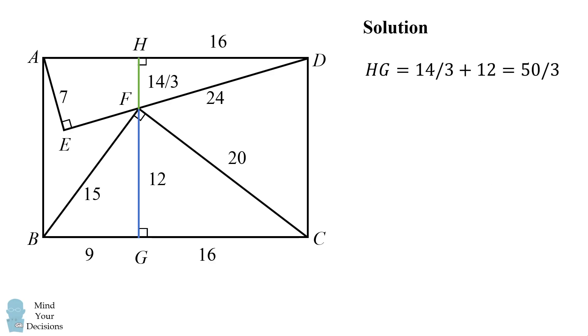So now, HG is equal to 14 over 3 plus 12, which is equal to 50 over 3. And notice this is exactly equal to AB, because AB is equal to HG. Therefore, AB is equal to 50 over 3.